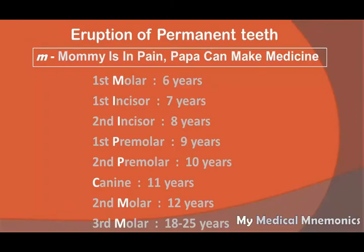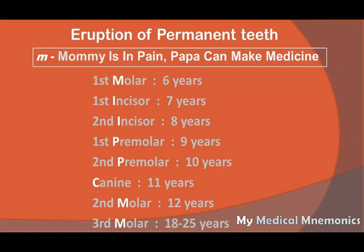There is a simple and very famous mnemonic: 'Mummy is in pain, papa can make medicine.' M from 'Mummy' stands for first molar, erupting at around six years. The first 'is' represents central incisor, erupting at around seven years. 'In' represents lateral incisor, erupting at around eight years. Then there are two P's — 'pain' for first premolar erupting at nine years, and 'papa' for second premolar erupting at around ten years.